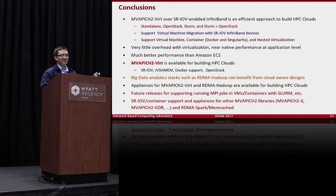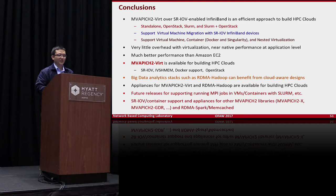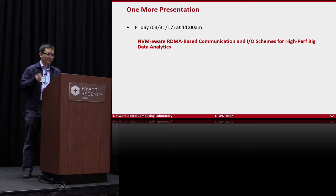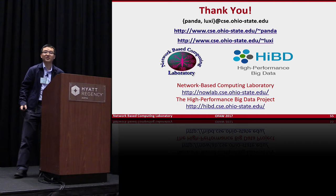Most of these features have been released in the MVAPICH2 library. For the big data side, we continue improving Hadoop on cloud infrastructure. Future directions include making further releases, enhancing RDMA-Spark, and Memcached integration. I will give another talk tomorrow about NVM-based communication for big data. Thank you to all the team members.